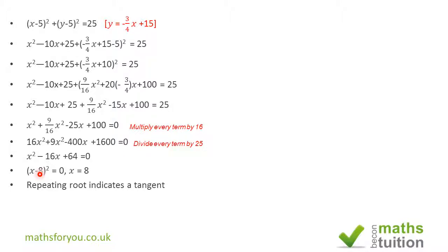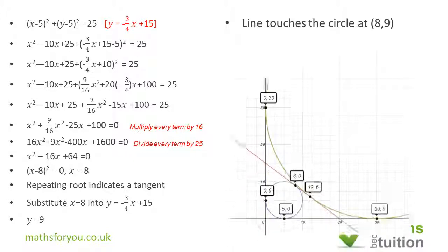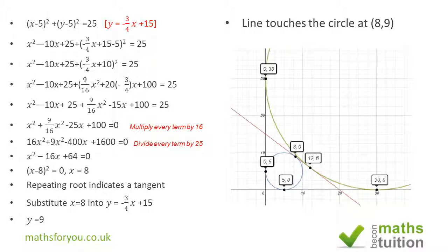Substituting x = 8 back into y = −(3/4)x + 15 gives y = 9, confirming the small circle and the line touch at (8, 9). You can try the same substitution for the bigger circle. Plotting both circles with the tangent line on a graph confirms all results. Please subscribe, and I hope that makes sense. Thank you for watching — bye!